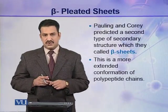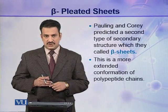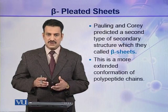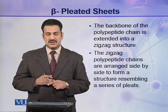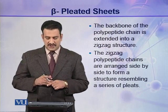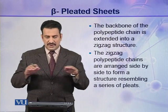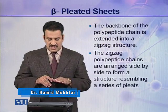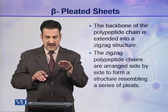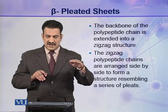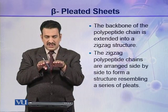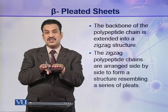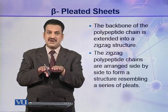Pauling and Corey predicted a second type of secondary structure which they called beta sheets, or generally beta conformations. This is a more extended conformation of the polypeptide chain as compared to the alpha helix. In beta sheets, the backbone of the polypeptide chain is extended into a zigzag structure. The zigzag polypeptide chains are then arranged side by side, and when arranged side by side they resemble a pleated sheet — that's why these structures are called beta pleated sheets.